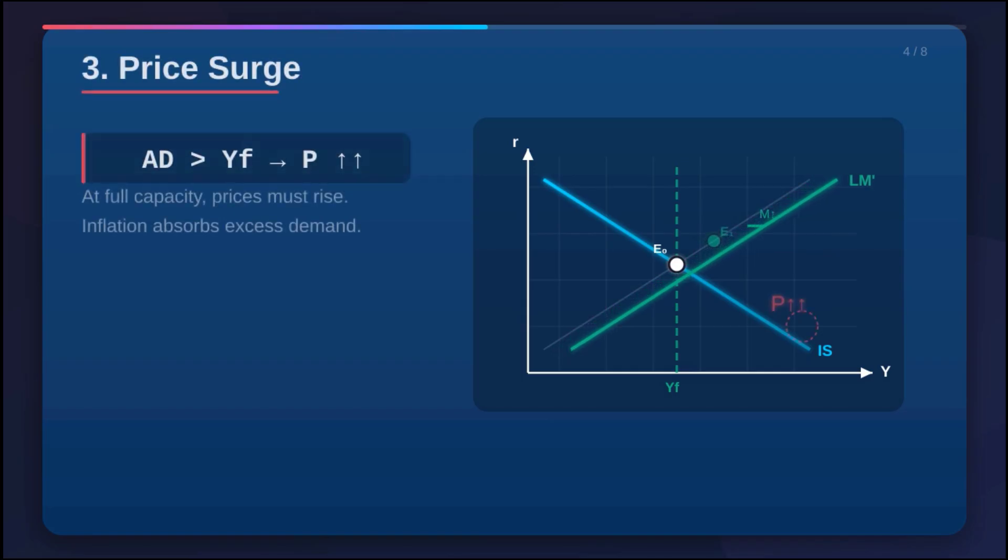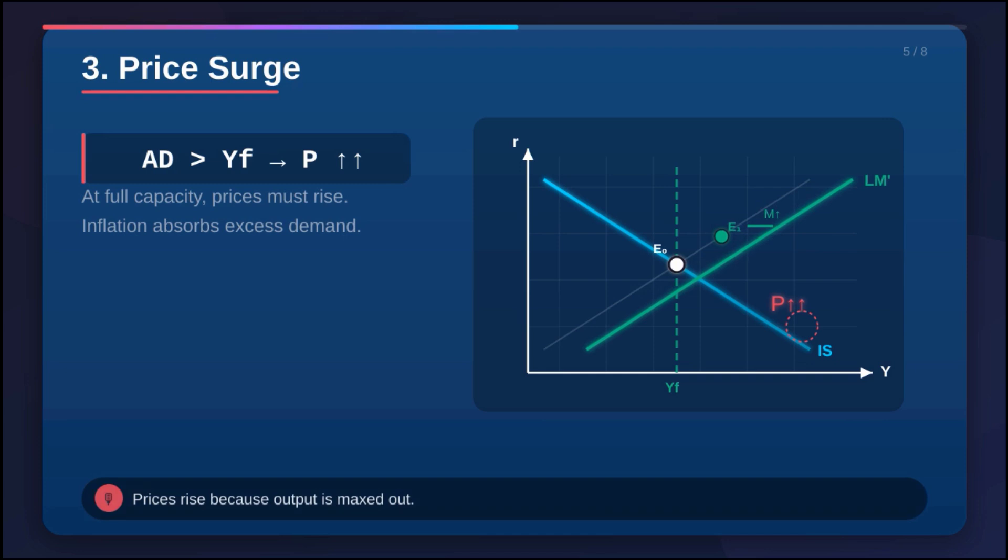You create scalping, not capacity. And that scalping in our economic model, that's inflation. Since the economy can't physically make more stuff to meet the demand, the only thing that can give is the price. Everything just gets more expensive.